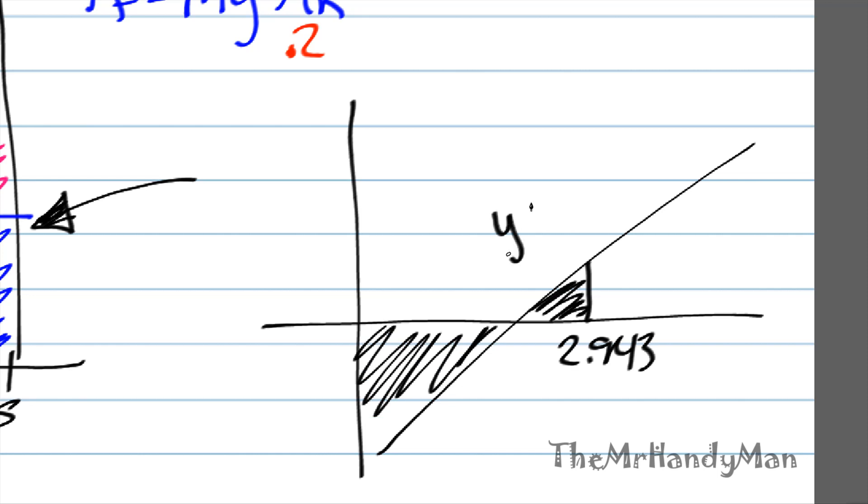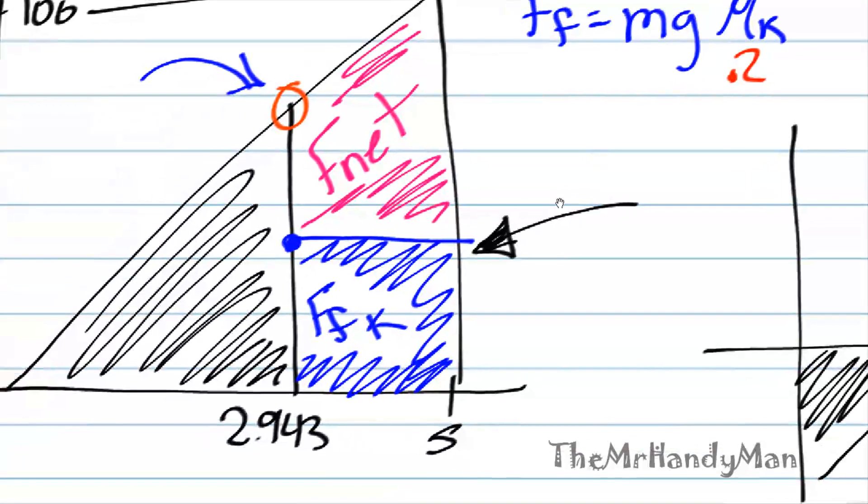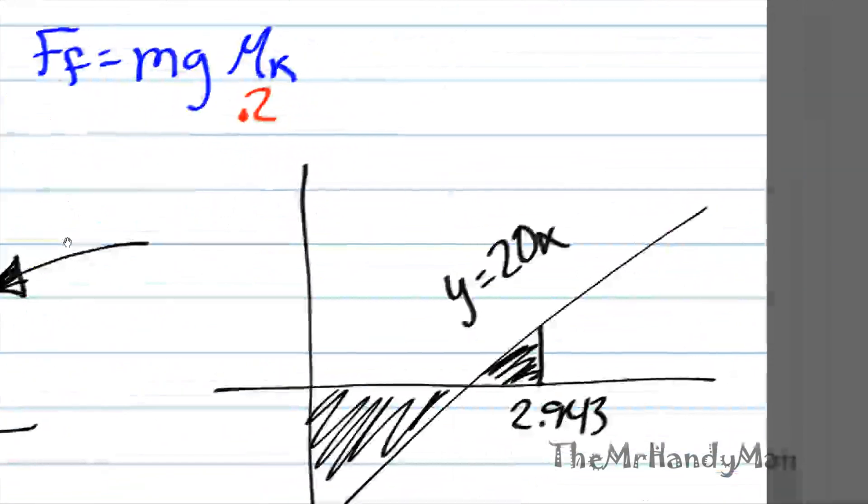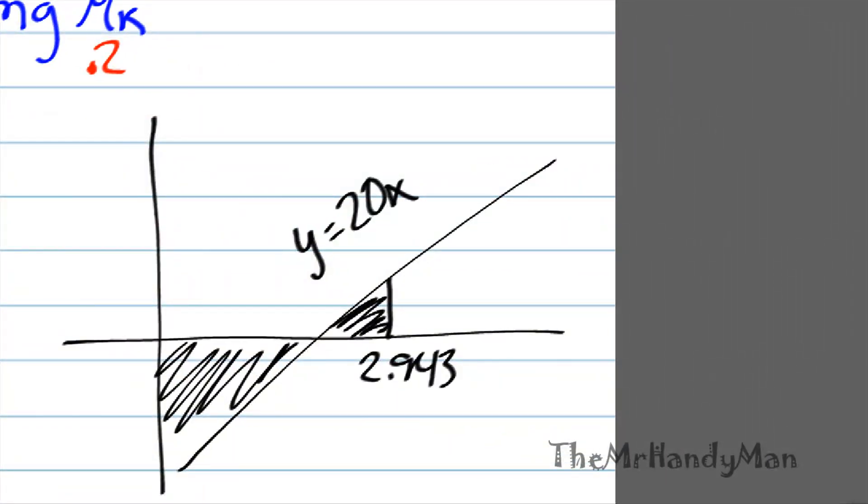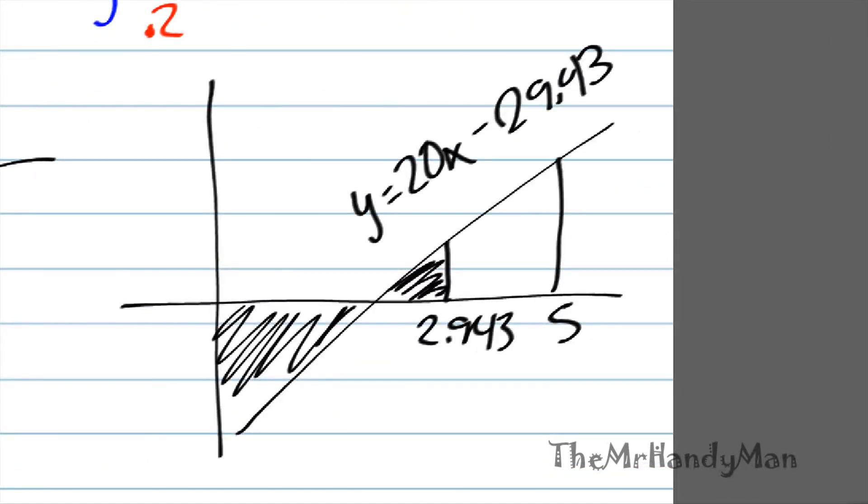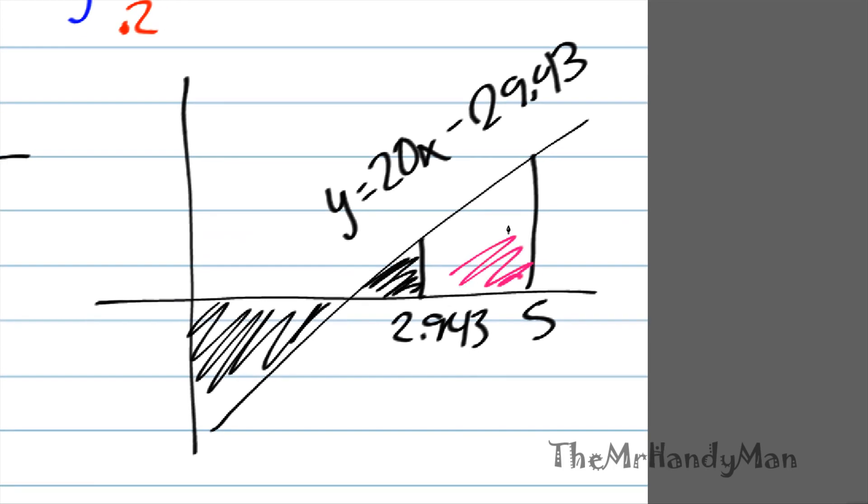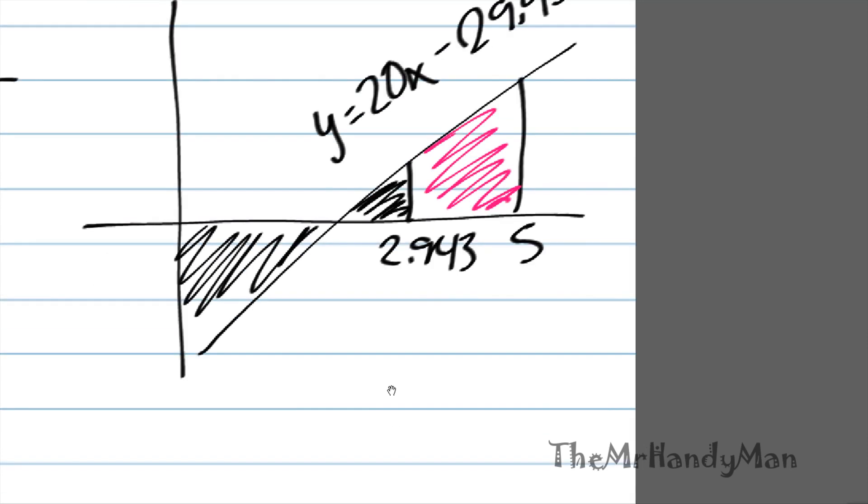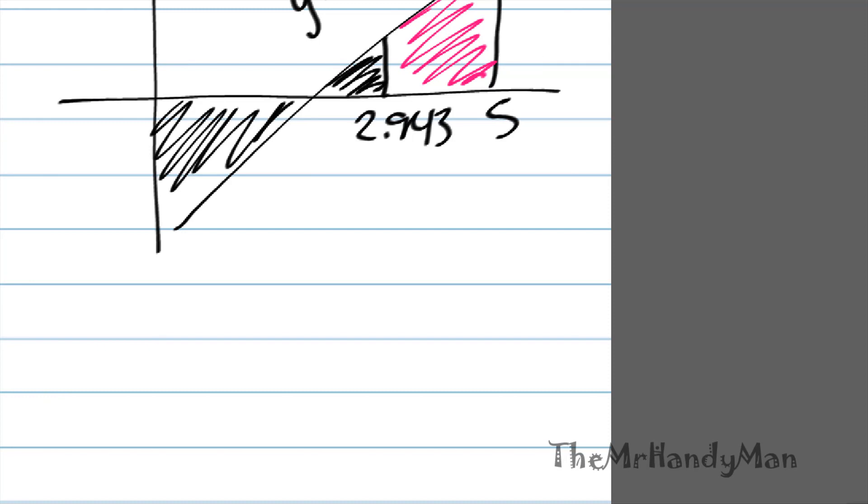The function for this is no longer just y equals 20x. What I'm doing is I'm saying y equals 20x minus this section, 29.43. Minus 29.43. You're probably sitting there going, why are you doing that? Well, I'll show you in a second. This is your F net right here. Doesn't this look easier to use an integral to solve for that area under the curve?